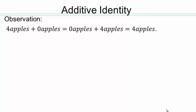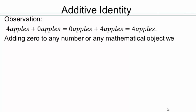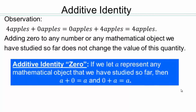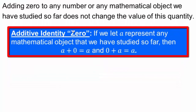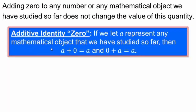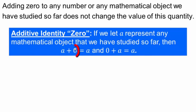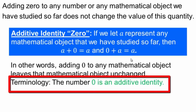Now let's look at additive identity. Consider zero apples interacting with four apples. If you add zero apples to four apples, or four apples to zero apples, you end up with four apples. So adding zero to any mathematical object does not change its quantity. Our additive identity is zero: A + 0 = A and 0 + A = A. Zero is the additive identity.